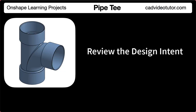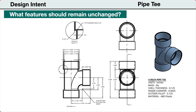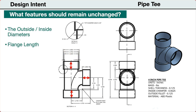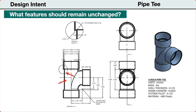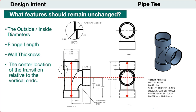Next, let's establish our design intent. To start, we need to identify any features that might be changed during the design process. For this design, we may need to increase the length of the pipe. Next, we should identify the features that should remain unchanged when it is revised. In this case, the outside and inside diameters will remain the same. The length of the end flanges will not be changed. The wall thickness will remain the same.